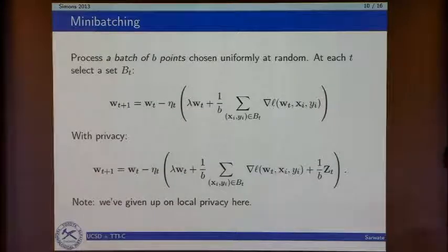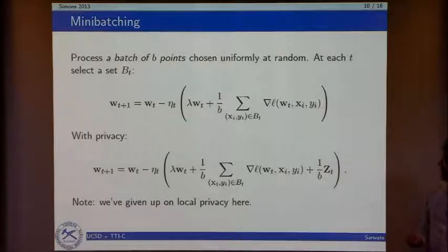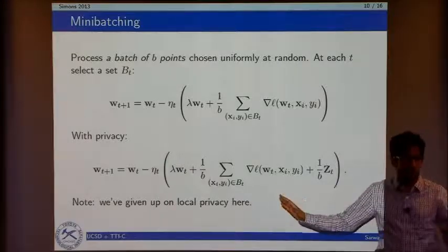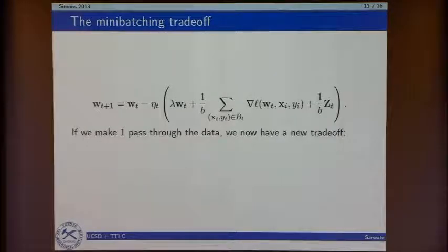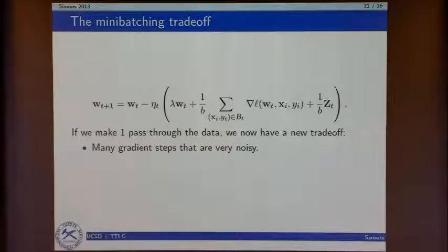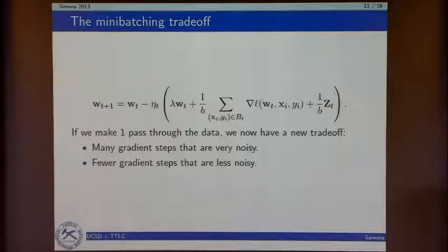With mini-batching, I sample B points uniformly at random from the dataset, compute B gradients, and take an averaged gradient step. With privacy, I get a B-factor reduction in the noise. The trade-off is: I could take many very noisy gradient steps — drunkenly stumbling toward the optimum — or take fewer less-noisy steps. With batch size B, I take 1/B times as many steps, so many fewer steps overall.